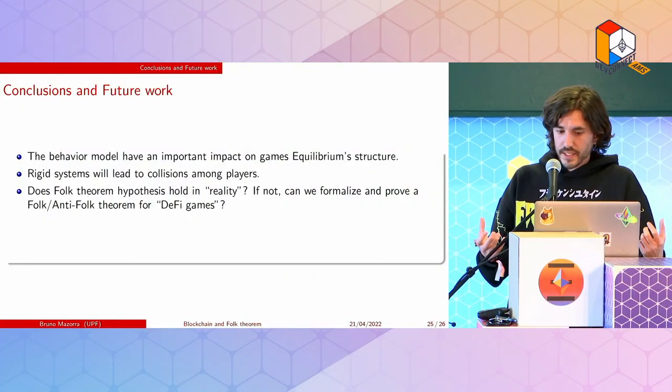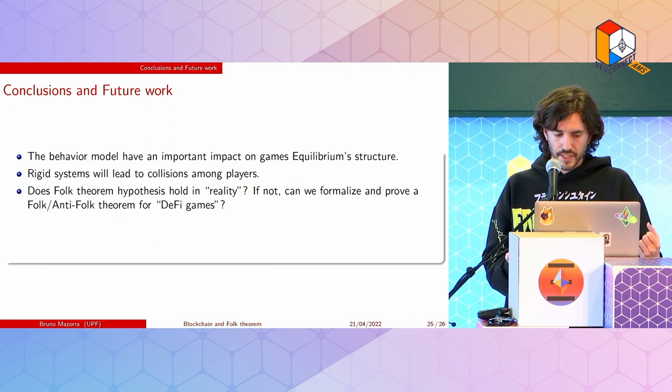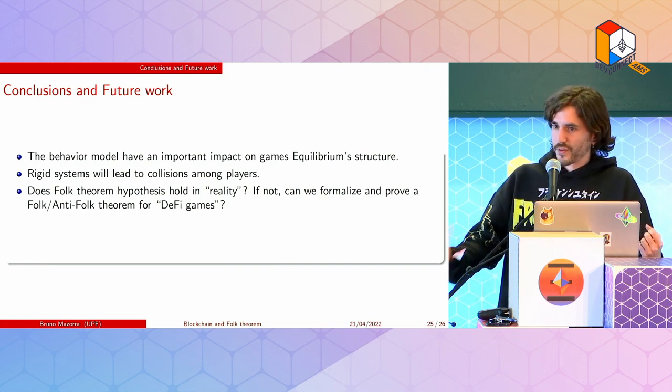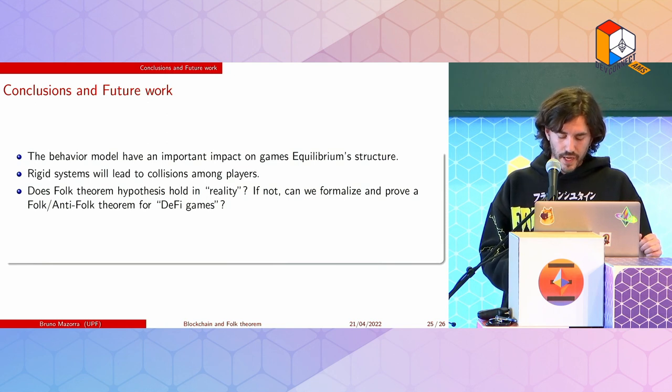Right now we generally see players being rational for only a finite amount of time, and we don't see that much collusion. So maybe the model with all the assumptions of repeated games doesn't fully apply. If it's not real, can we formalize something closer to what happens in blockchain technology and prove formally a folk or anti-folk theorem in DeFi games?